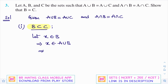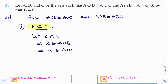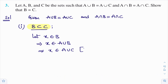If X belongs to set B, then definitely X belongs to A union B. This we learn from the definition of union of sets — if X belongs to B then X belongs to A union B. And we know that they have given A union B is the same as A union C, so I can write that X belongs to A union C.